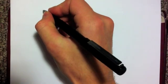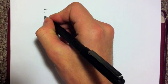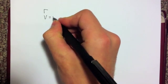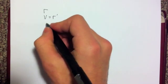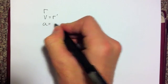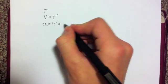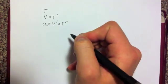First, its position is given by r, and its velocity given by v, which is equivalent to the derivative of the position. Similarly, the acceleration is equivalent to the derivative of the velocity, or the second derivative of the position.